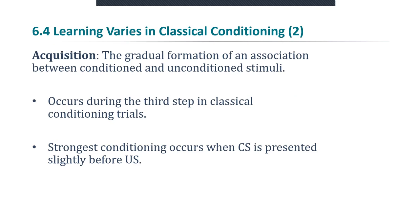Let's look at some classical conditioning concepts. We'll begin with acquisition, which is the gradual formation of an association between conditioned and unconditioned stimuli. It occurs during the third step in classical conditioning trials, and it's the phase during which a conditioned response is established. Strongest conditioning occurs when the conditioned stimulus is presented slightly before the unconditioned stimulus. In the Pavlov example, you would want to play the metronome slightly before you present the food to the dog.